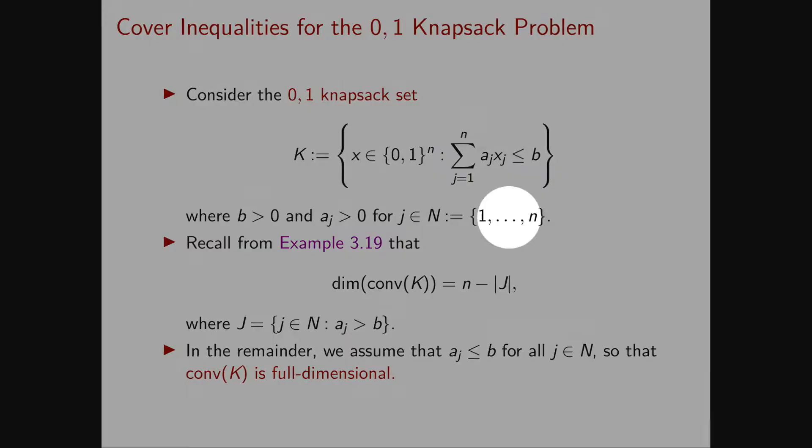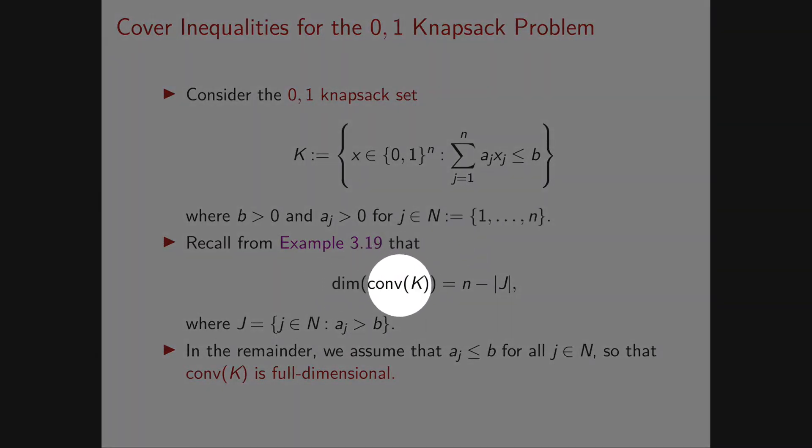In Chapter 3, we saw that the dimension of K, or equivalently of the convex hull of K, is exactly n minus the cardinality of the set J.